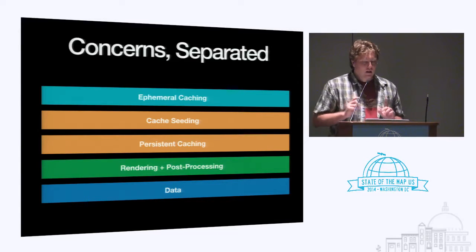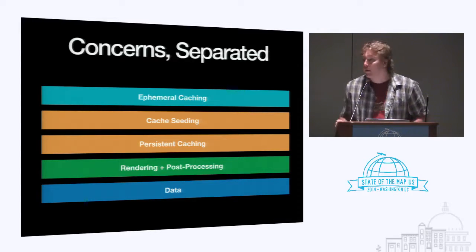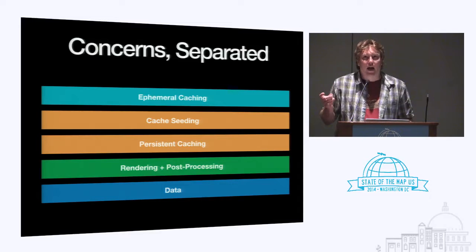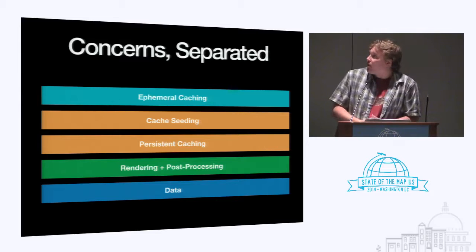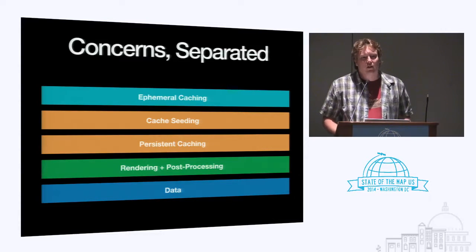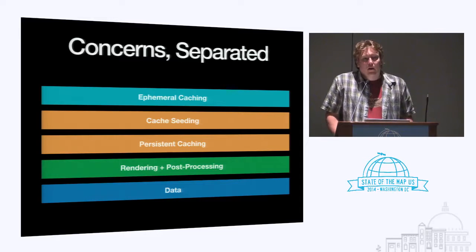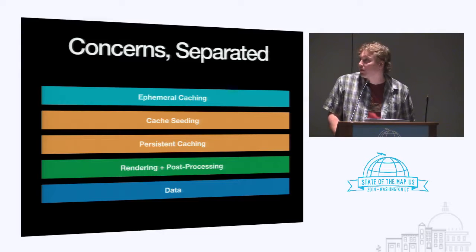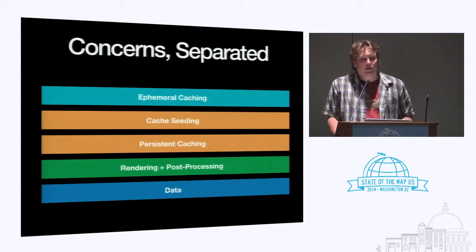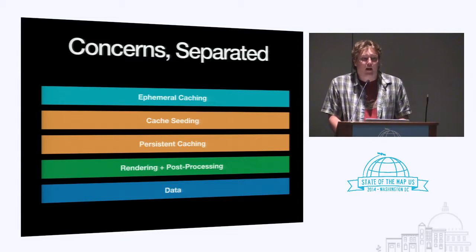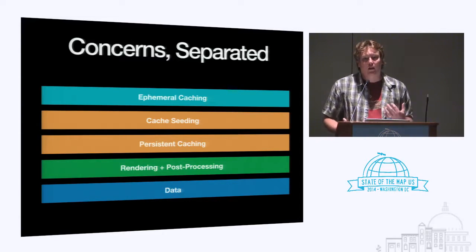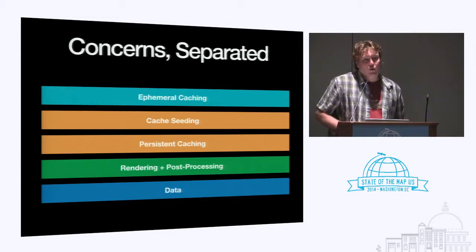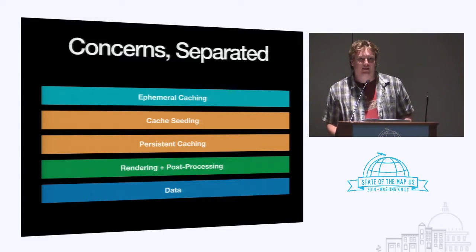These are the conceptual layers I think of when looking at rendering infrastructure. The topmost, closest to the user, is ephemeral caching — usually in the form of a content delivery network. That's where tiles need to come back the fastest, and you pay a bit more for those benefits. There's also cache seeding: we found it makes sense to take a hybrid approach — render the really popular areas ahead of time and let the rest fill in as people request them, so if there's a pile-on effect, we'll have already rendered those areas.